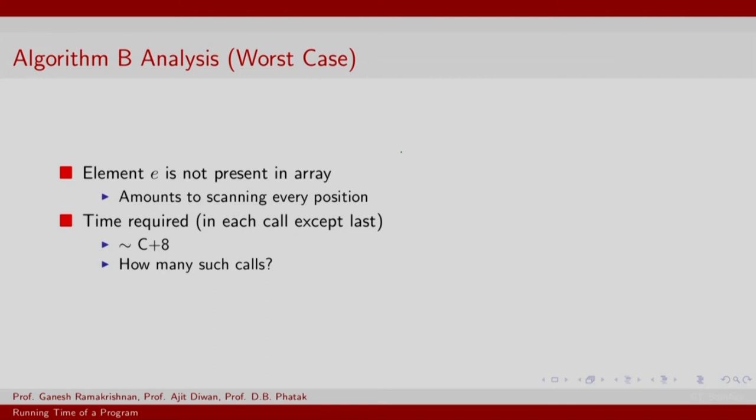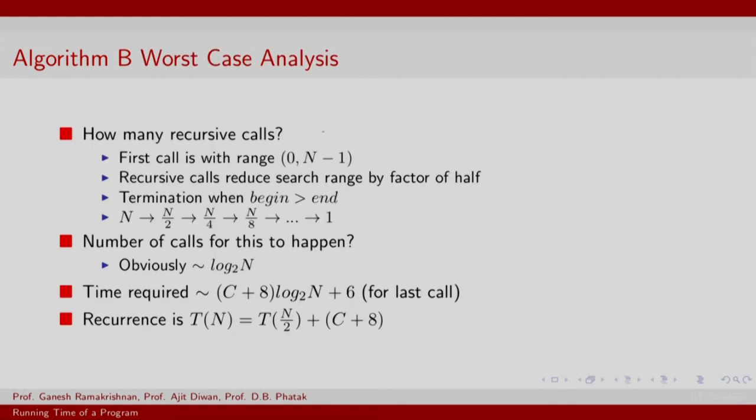So let us look at the worst case for algorithm B, and that is when the element E is not present in the array, which basically amounts to scanning every position in the array. So this time required is basically C plus 8 for each call except for the last call. The last call you basically find that the array is empty and you exit. So how many such calls?